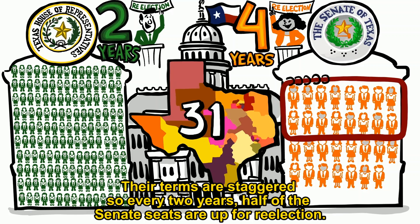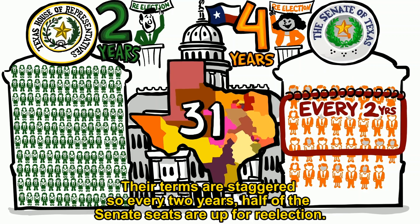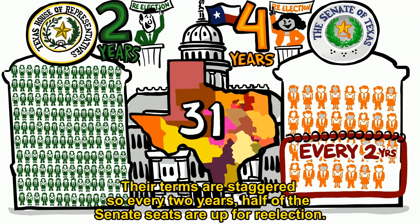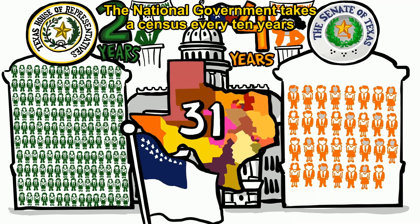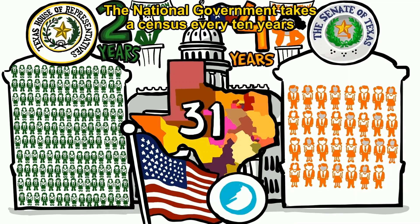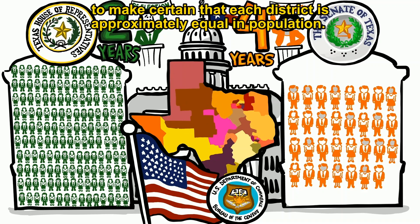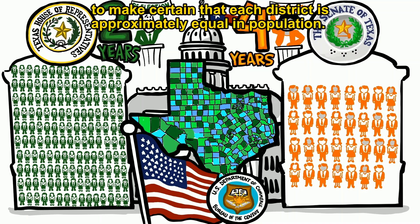Their terms are staggered, so every two years, half of the Senate seats are up for re-election. The national government takes a census every 10 years, and the districts for both chambers must be redrawn to make certain that each district is approximately equal in population.